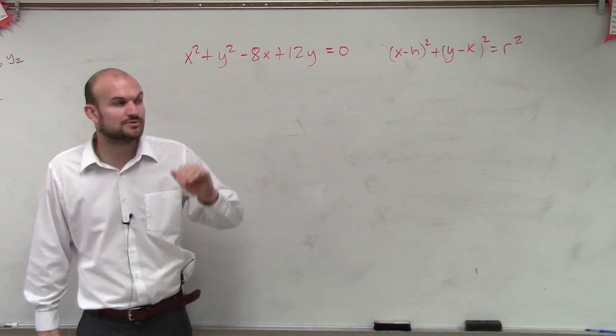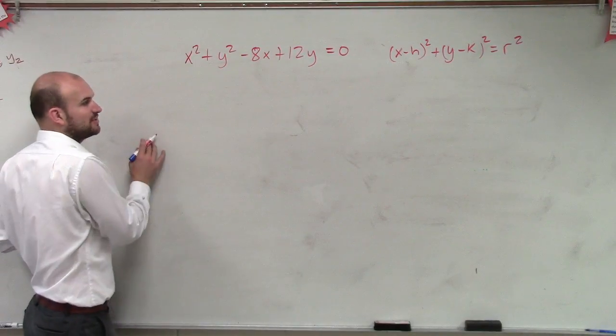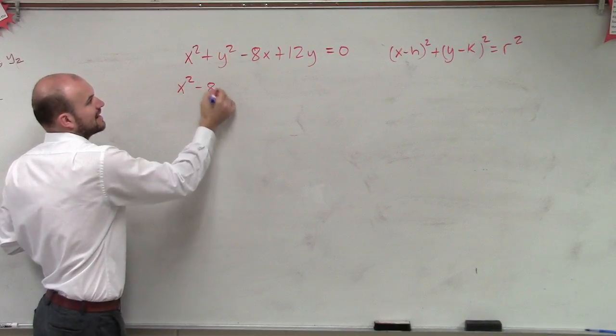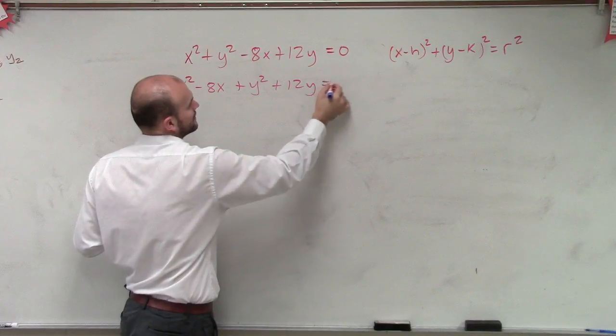So in this case, what we're going to do is we're going to complete the square twice. To complete the square, we first have to arrange our variables together. So we have x squared minus 8x plus y squared plus 12y equals 0.